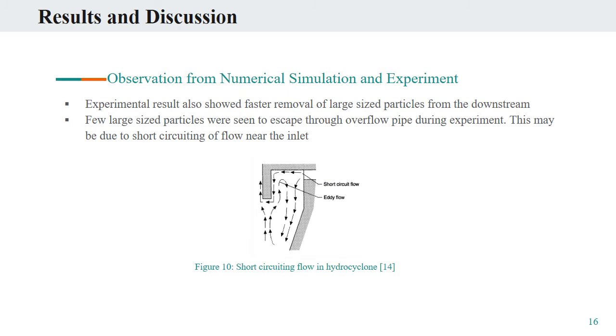Similar phenomena are found from the experimental results. Large-sized particles escape at a faster rate from the bottom underflow pipes. In contrast to the numerical results, few large-sized particles were seen to escape and be collected from the overflow pipe. The reason behind this can be short-circuiting of the flow near the inlet, bypassing large-sized particles directly towards the overflow pipe.